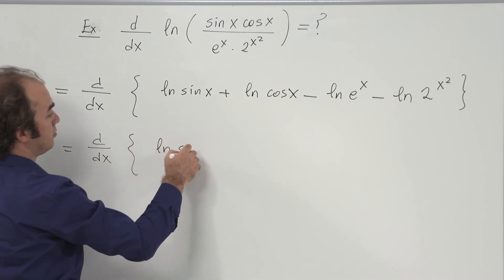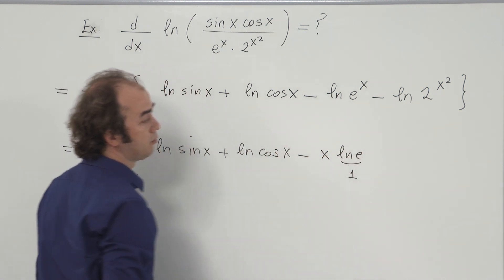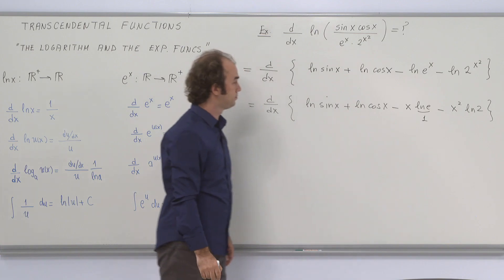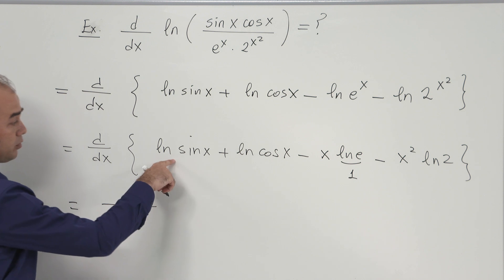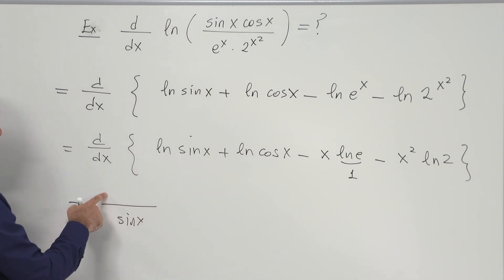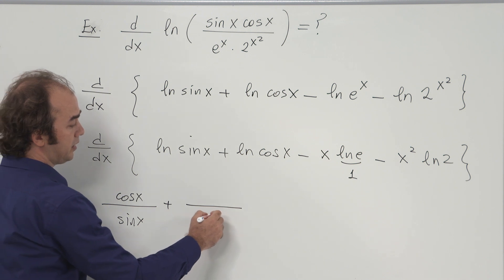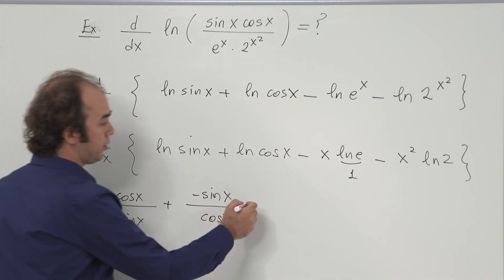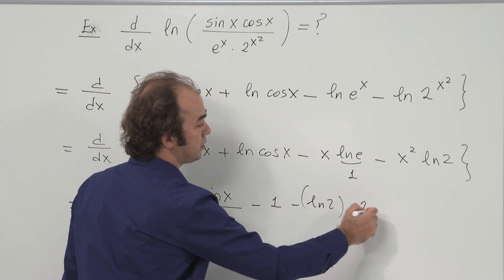Keeping the first two terms and simplifying the last two: minus x times ln(e) minus x² times ln(2). Now this is quite easy to differentiate. The derivative of ln(sin x) gives cos x over sin x; the derivative of ln(cos x) gives minus sin x over cos x; the third term gives minus 1; and the last term gives minus 2x times ln(2).